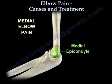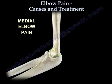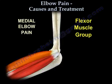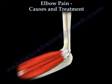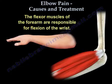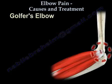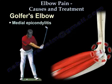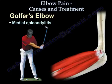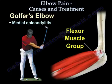Medial elbow pain: on the medial side you find the medial epicondyle, the ulnar nerve, and the ulnar collateral ligament, as well as the flexor muscle group. The flexors are responsible for flexion of the wrist. Golfer's elbow, also called medial epicondylitis, occurs due to injury and degeneration of the flexor muscle group.